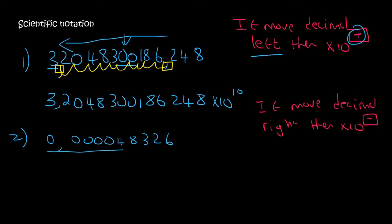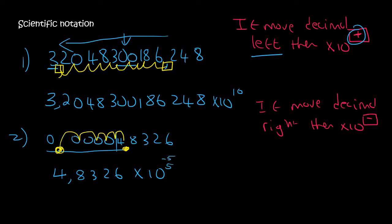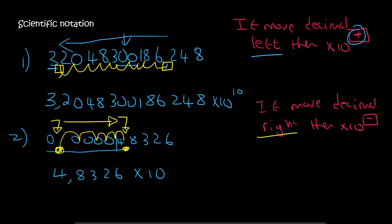Here's another one. Look at all these zeros in the front. So we start with the 4 and say comma, then 8, 3, 2, 6, then times 10. Now we need to see where the decimal is in the beginning, then look where it is at the end — that is 1, 2, 3, 4, 5 places. So it could be a positive 5 or negative 5. The original number had the decimal here, now it's over here — it has moved to the right. If we move the decimal to the right, then it's negative. We moved it 5 places, so we say negative 5: times 10 to the minus 5.